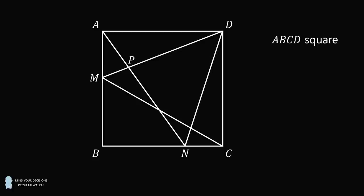Let P be the intersection of AN with DM, let Q be the intersection of AN with CM, and let R be the intersection of CM with DN.